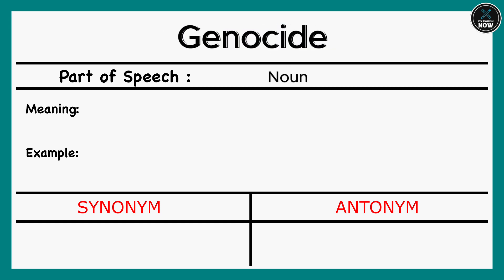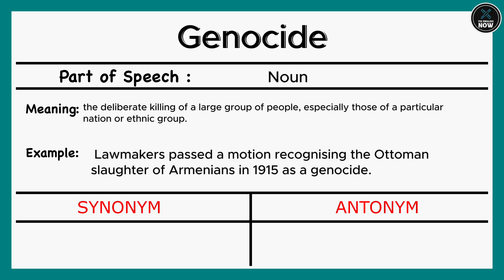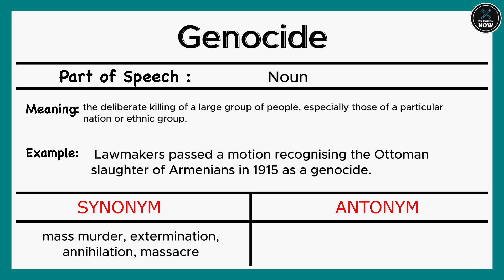Genocide: The deliberate killing of a large group of people, especially those of a particular nation or ethnic group. Example: Lawmakers passed a motion recognizing the Ottoman slaughter of Armenians in 1915 as a genocide. Synonyms: Mass murder, Extermination, Annihilation, Massacre. Antonyms: Peace, Toleration, Amity, Endurance.